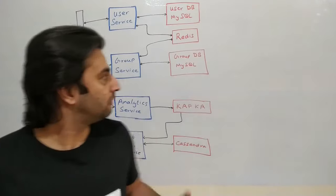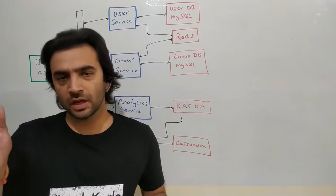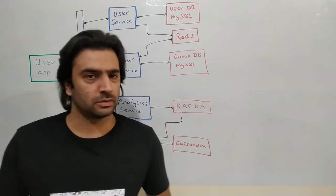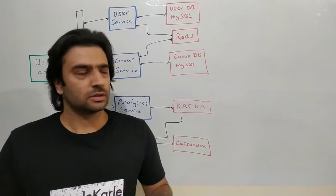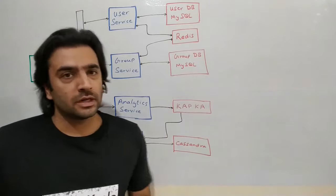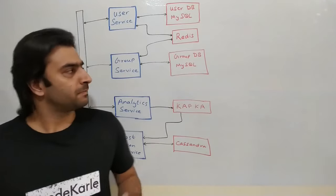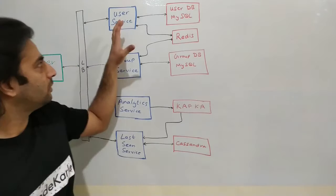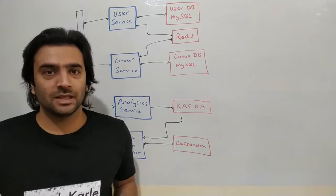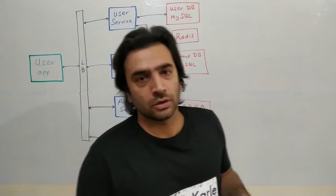There's also a Group Service that maintains all group information — basically a many-to-many table of user IDs and group IDs, including when a user was added and their role such as admin. This is stored in a MySQL cluster that is geographically distributed with multiple read slaves. A Redis cluster sits on top for caching, so APIs like 'get users in a group' are powered by Redis. Cache misses fall through to the MySQL slaves. Group Service was used in the group messaging workflow we discussed earlier.